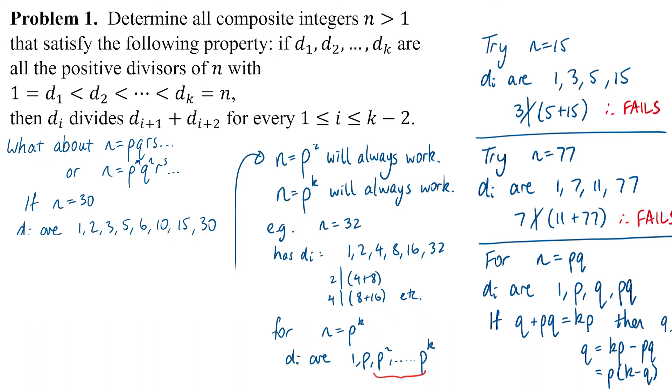To test whether this number satisfies the condition, 1 of course divides 2 plus 3. 2 does divide 3 plus 5. 3 does not divide 5 plus 6, so we fail a test there.